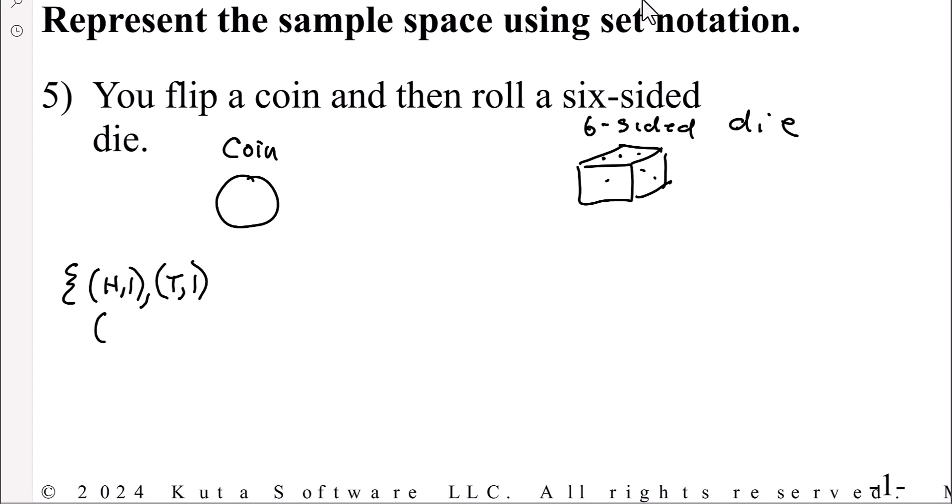So let's do it this way. You could roll a heads and get a 2. You could roll a tails and get a 2. Heads and get a 3. Tails and get a 3. Heads get a 4. Roll a 4. Tails get a 4. You guys get the idea. And finally, you could roll a heads, roll a 6. You could roll a tail. Or flip a coin, get a tail.